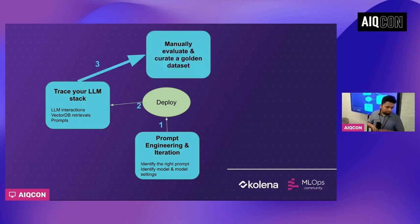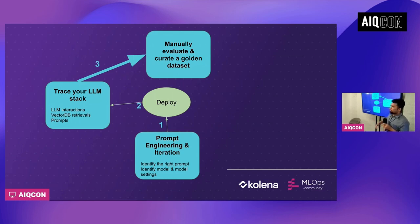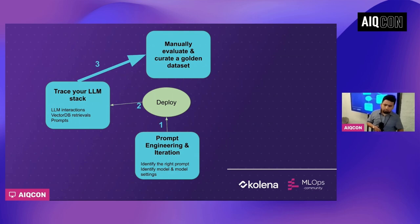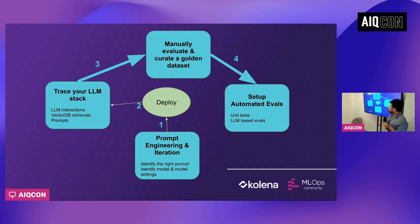Once you start tracing, the next step is to manually evaluate. You need to look at your data — that is table stakes. It's not a sustainable approach long-term, but initially you need to look at your data deeply to understand your use case. A nice side effect of this is you can curate a golden dataset, which you can use for running regression testing in the future. Once you start manually evaluating and curating, you will get a baseline performance of how your application is doing in production. The next step is to use the curated golden dataset to set up automated evals.